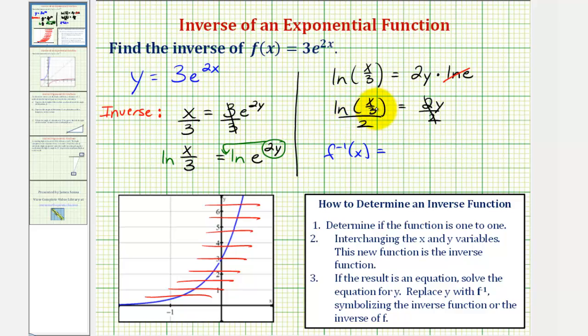we could leave this as a quotient, but dividing by 2 is equivalent to multiplying by 1 half. So let's write this as 1 half times natural log of x divided by 3. This would be our inverse function.